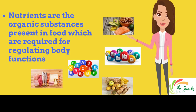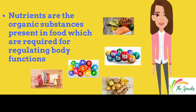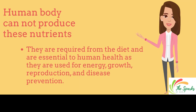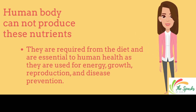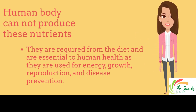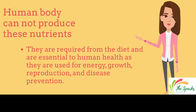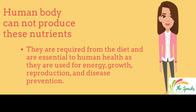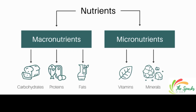Now we will categorize them into macronutrients and micronutrients. The human body cannot produce nutrients itself. They are required from the diet and are essential to human health as they are used for energy, growth, reproduction, and disease prevention. They are classified into two categories: macronutrients and micronutrients.